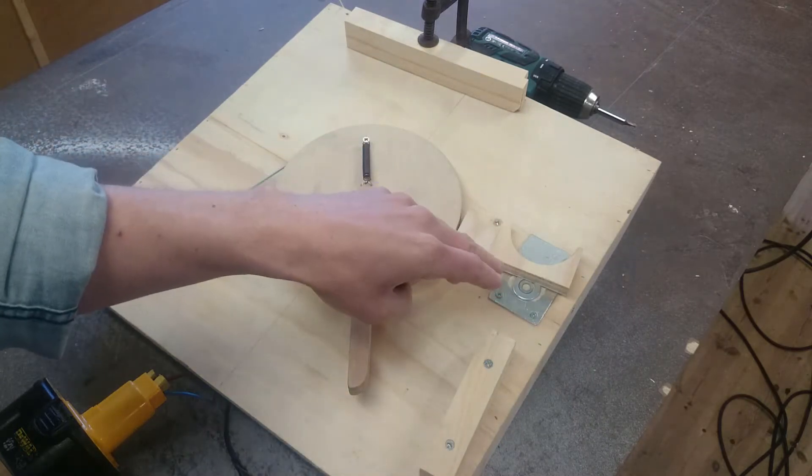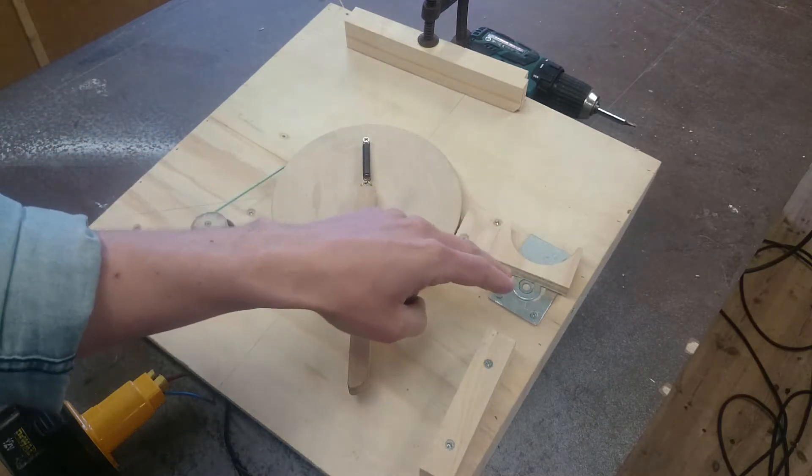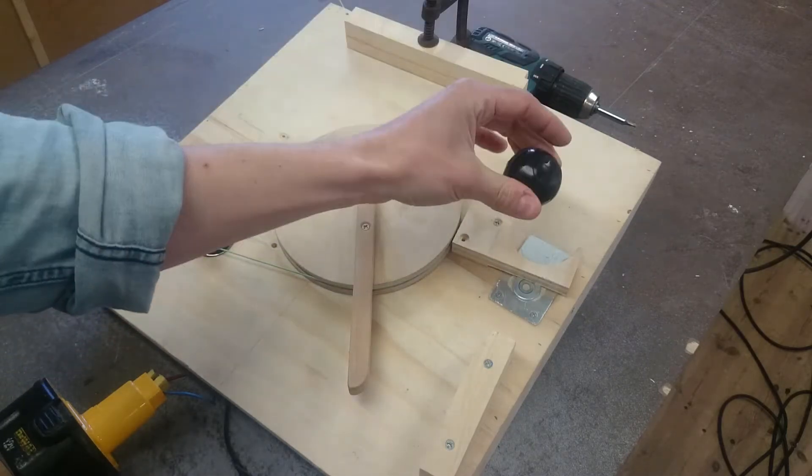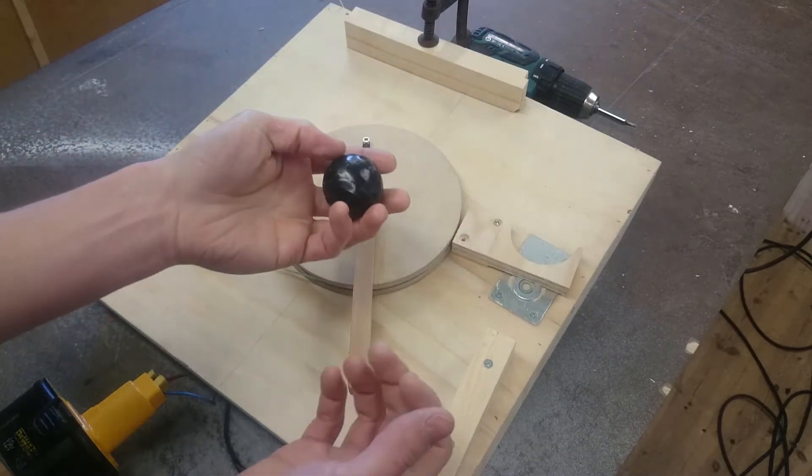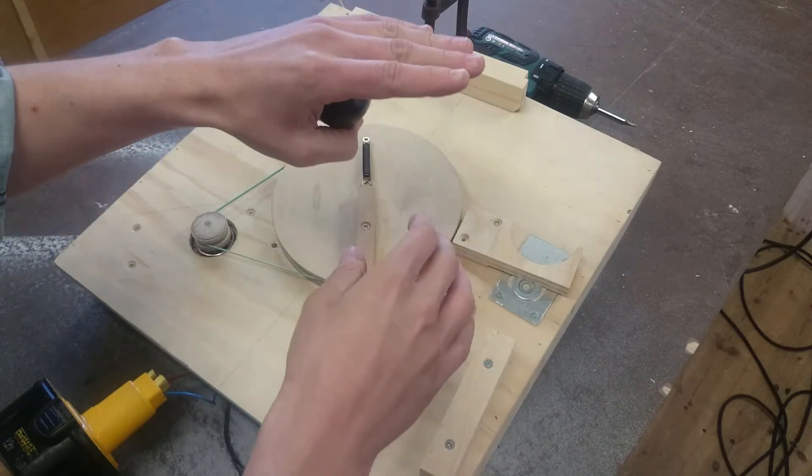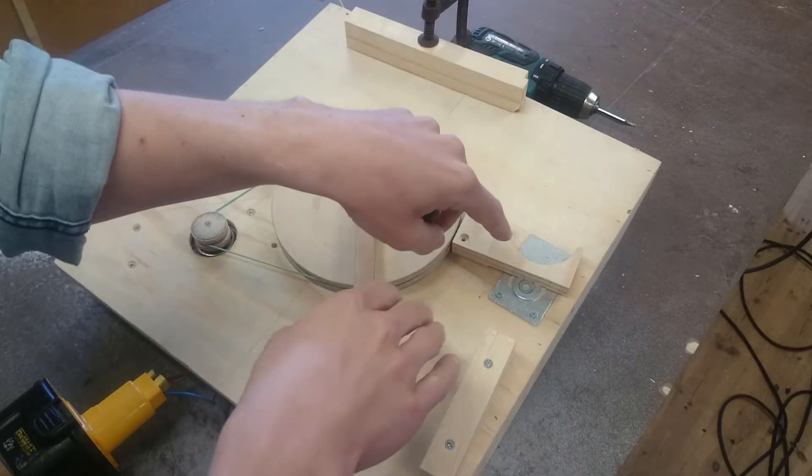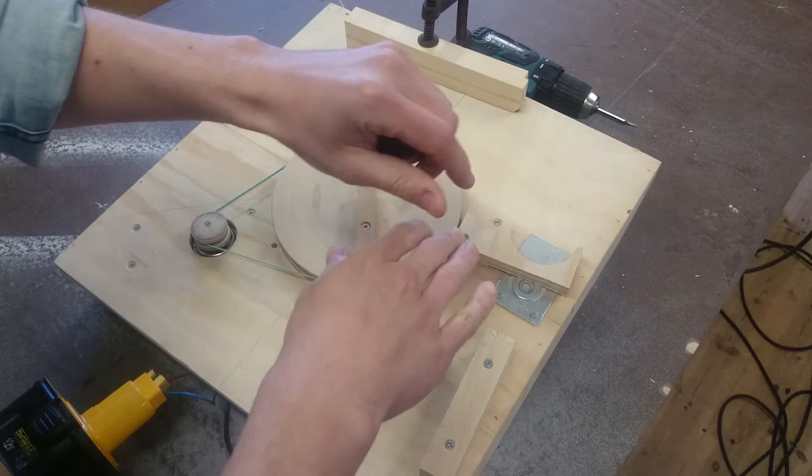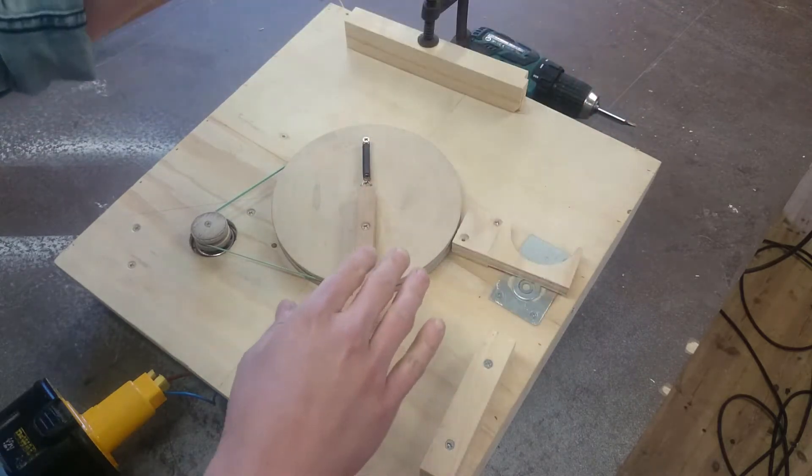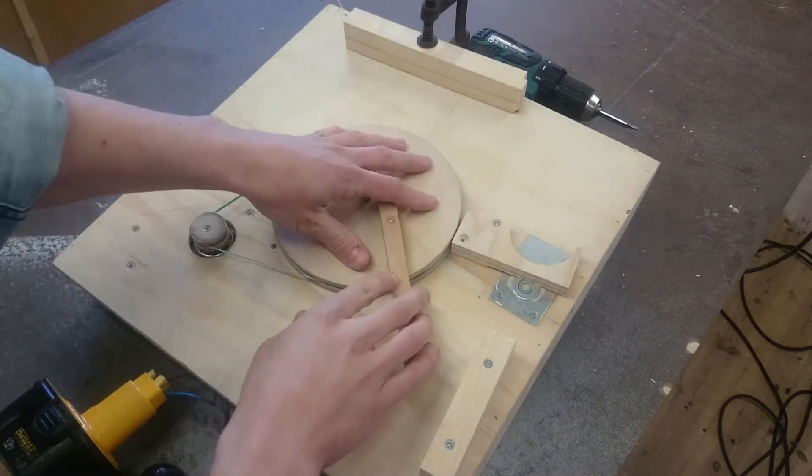So I put another washer on there and the ball triggers it fine. The thing is, because there's more weight on it, it takes that much longer for it to release when the ball leaves the machine.